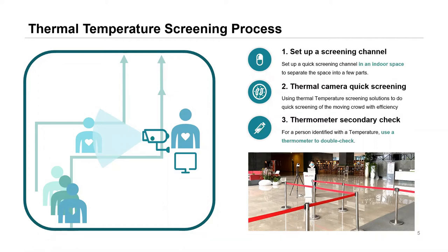For a person identified with a temperature, we recommend using a medical thermometer to confirm the elevated reading is genuine. The accuracy of our cameras is plus or minus 0.5 degrees, which can be improved to plus or minus 0.3 degrees with the introduction of a blackbody calibrator. A medical thermometer's accuracy is plus or minus 0.1 to 0.2 degrees, but it measures body temperature whereas our device measures skin surface temperature.